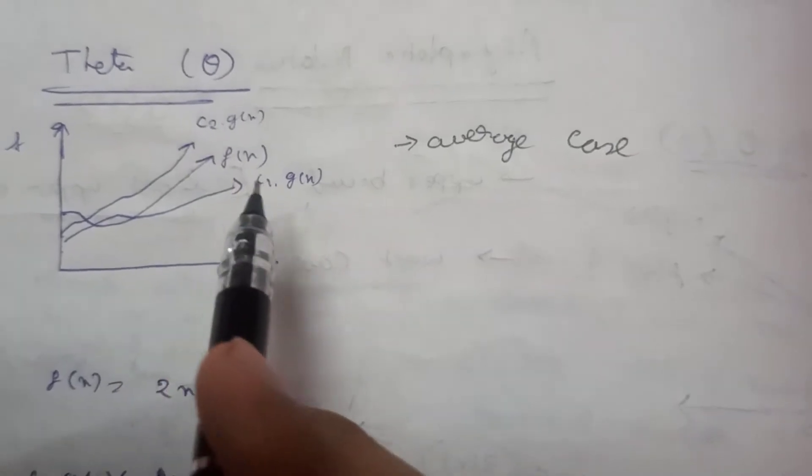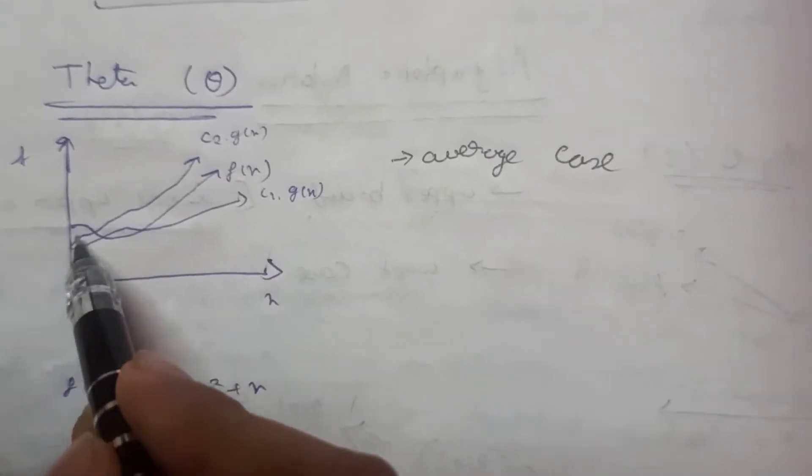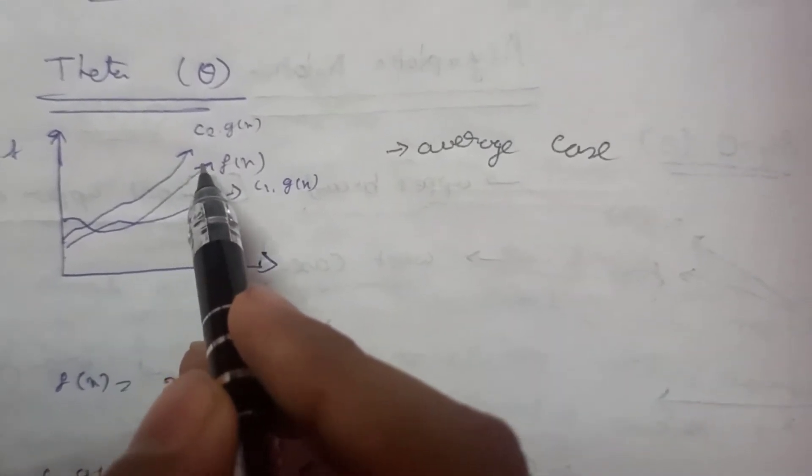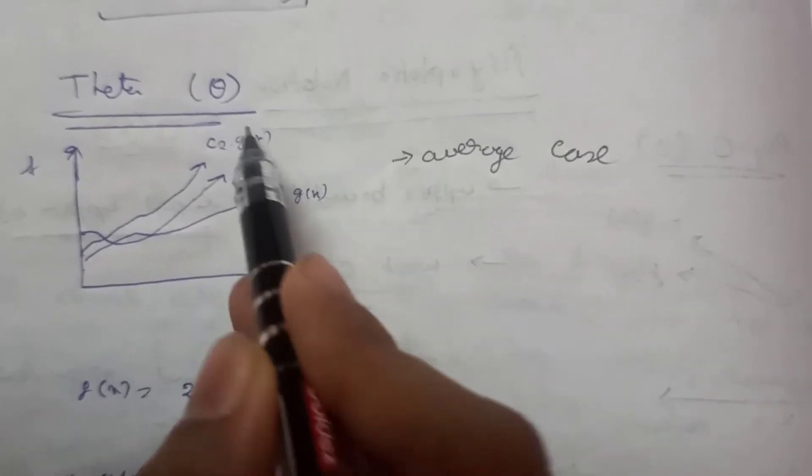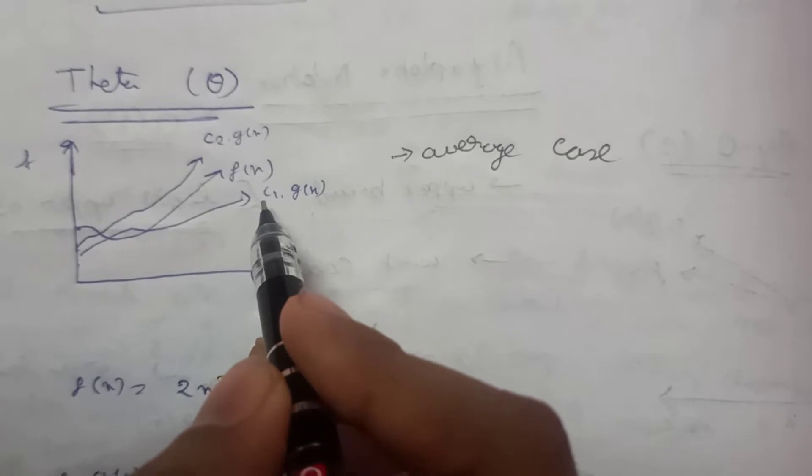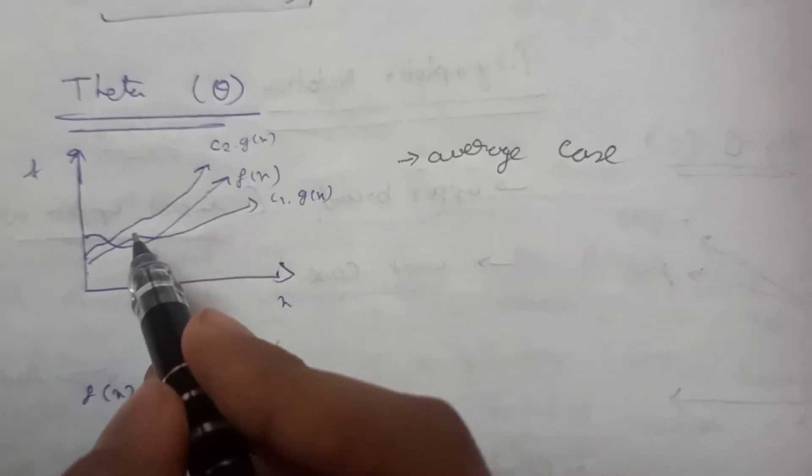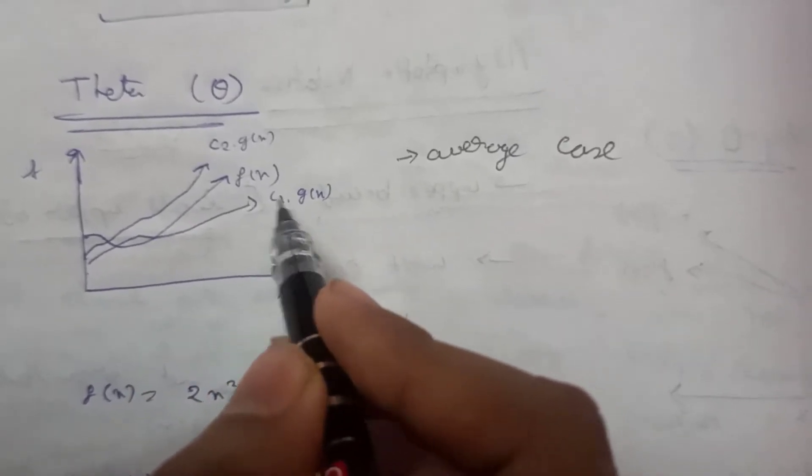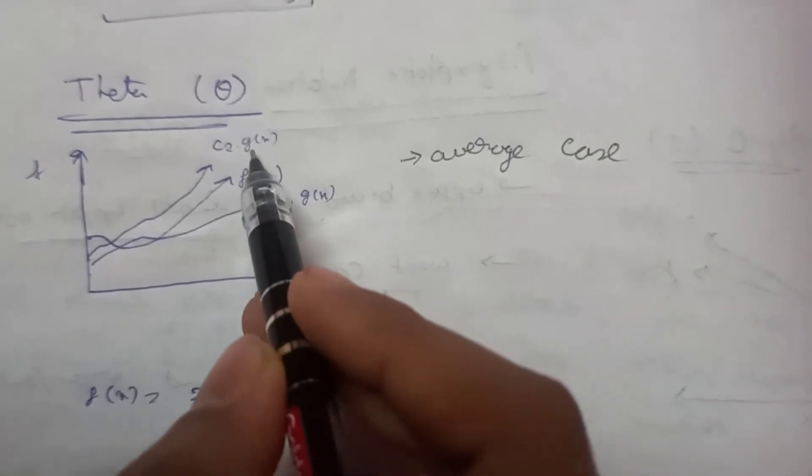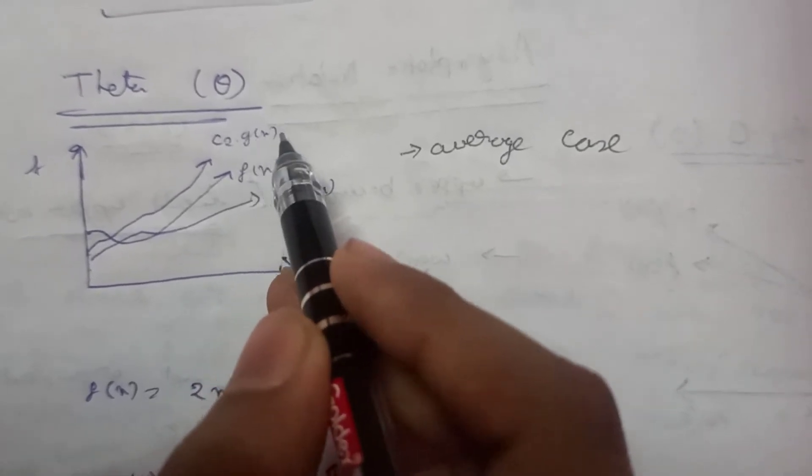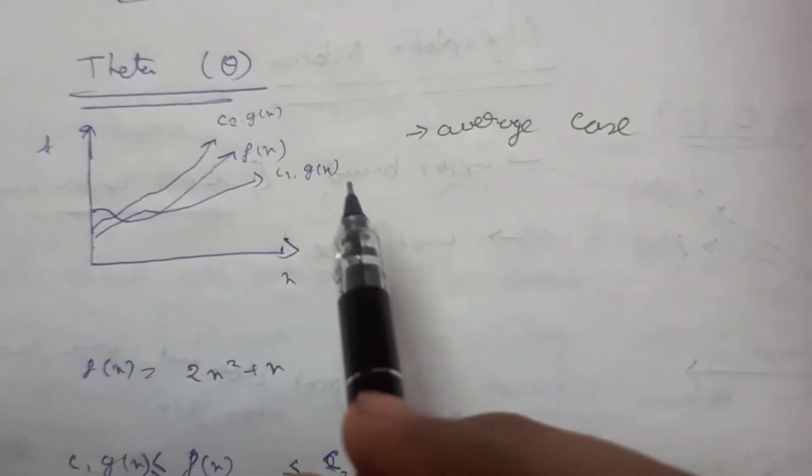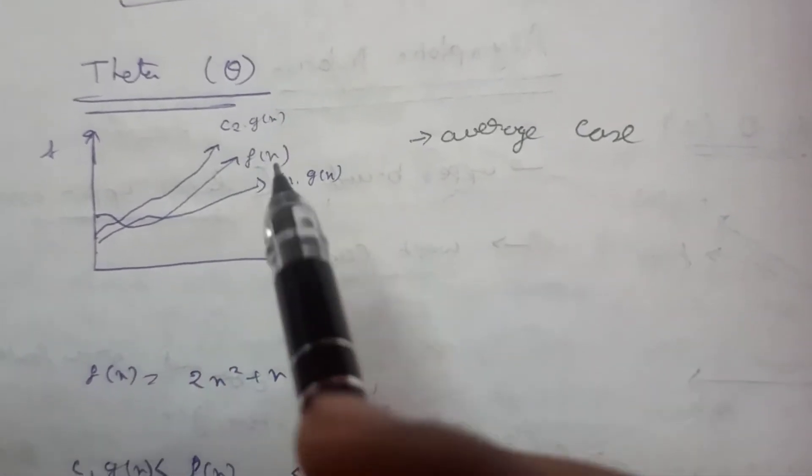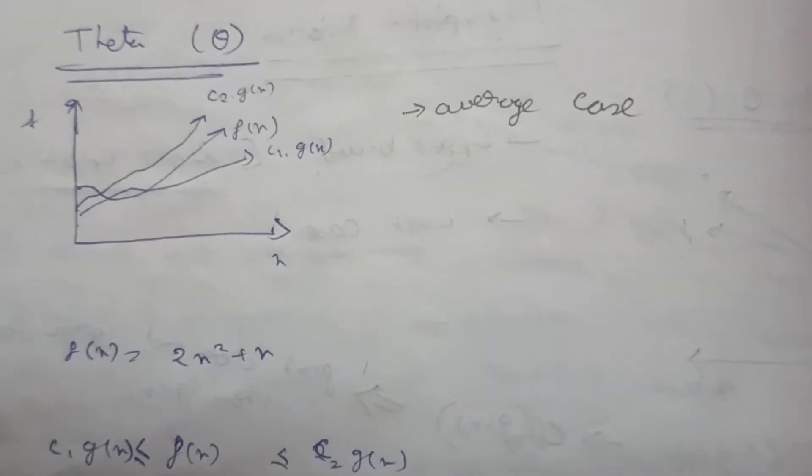So see there are three functions here I have written. One is f of n, that is the function which is given to us, and there are two g of n functions. But look that the constants c1 and c2 are different here. For constant c1 it is less than or equal to f of n, and for constant c2 it is greater than or equal to f of n. So this theta notation gives us average case time complexity.